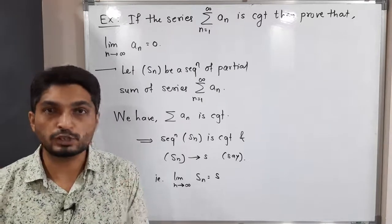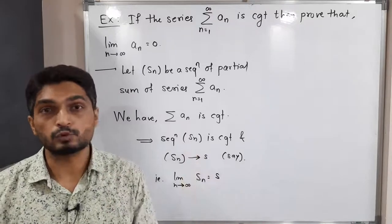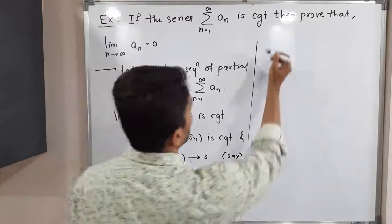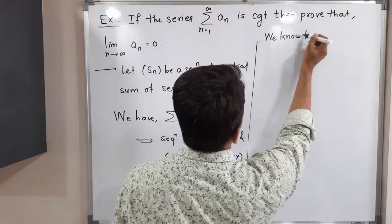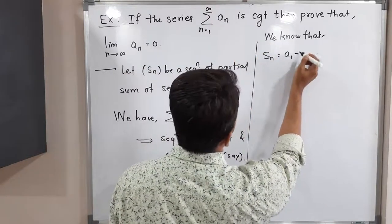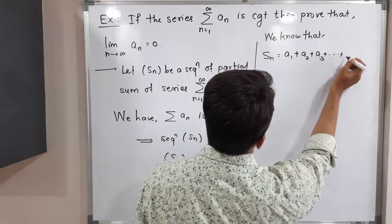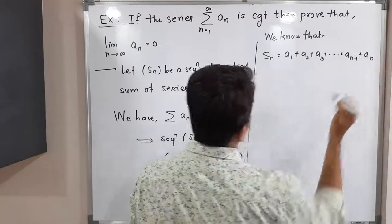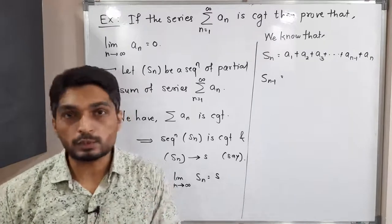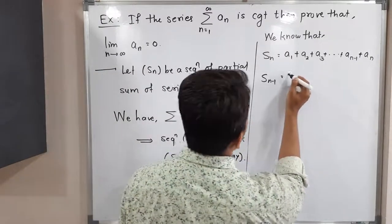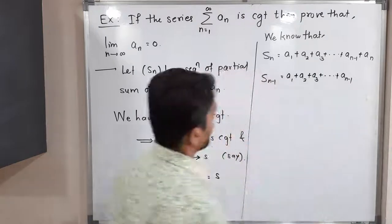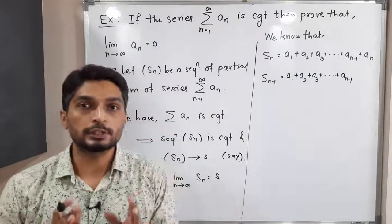We know that S_n is the sequence of partial sums, meaning if you add the first n terms of the series summation a_n then we get S_n. So S_n equals a_1 plus a_2 plus a_3 plus and so on, up to a_{n-1} plus a_n. Similarly, S_{n-1} means the sum of the first n minus 1 terms, so S_{n-1} equals a_1 plus a_2 plus a_3 plus and so on up to a_{n-1}.